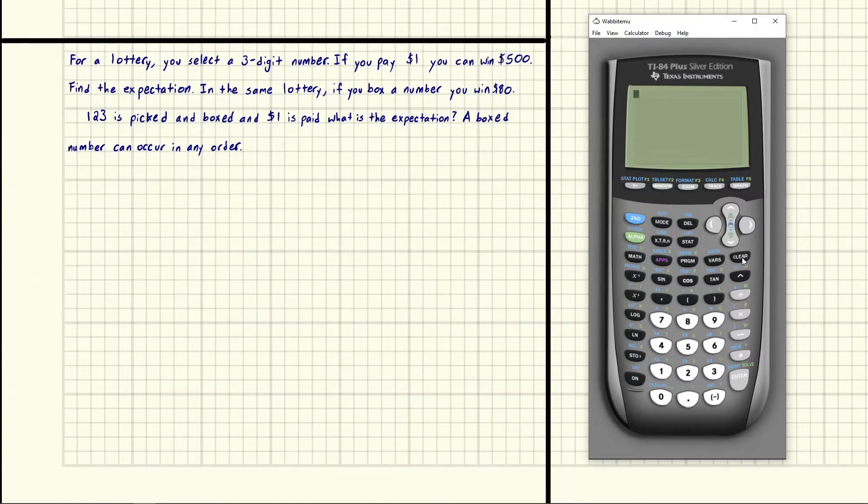Eric Burgess here. For a lottery, you select a three-digit number. If you pay $1, you can win $500. Find the expectation. In the same lottery, if you box a number, you win $80.